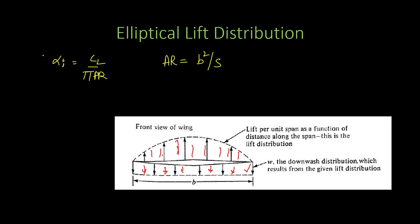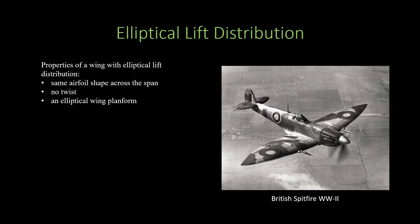This formula is true for elliptical lift distribution. To have elliptical lift distribution, the wing must have three properties: the same airfoil throughout the wingspan, no twist, and an elliptical wing planform. Such a wing is actually rare; one example is the British Spitfire, a World War II aircraft. Generally, elliptical wings are not found because they are not economical to manufacture.